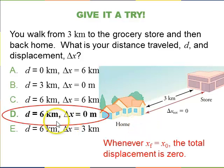Okay, so hopefully you chose d. The distance that you traveled was 3 to get to the store and then plus 3 to get back home, so that's 6 kilometers. However, your displacement was 0. Whenever your final position equals your initial position, so you start at home, end at home, that means your displacement is 0.